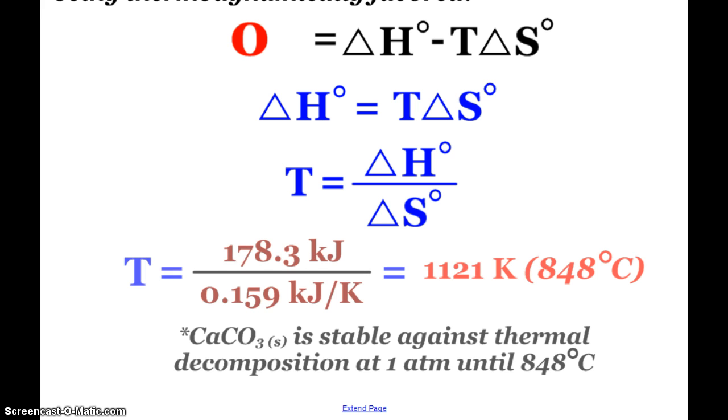So we look at those values that were given to us earlier. Again, make sure it's either kilojoules over kilojoules or joules over joules. Either way, we'll find that temperature to be 1,121 Kelvin or 848 degrees Celsius. So what that tells me as a chemist, as a scientist, solid calcium carbonate is stable against thermal decomposition at one atmosphere of pressure until 848 degrees Celsius.